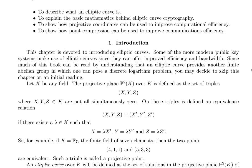Introduction. This chapter is devoted to introducing elliptic curves. Some of the more modern public key systems make use of elliptic curves since they can offer improved efficiency and bandwidth. Since much of this book can be read by understanding that an elliptic curve provides another finite abelian group in which one can pose a discrete logarithm problem, you may decide to skip this chapter on an initial reading.